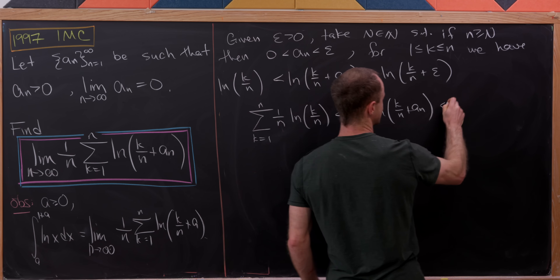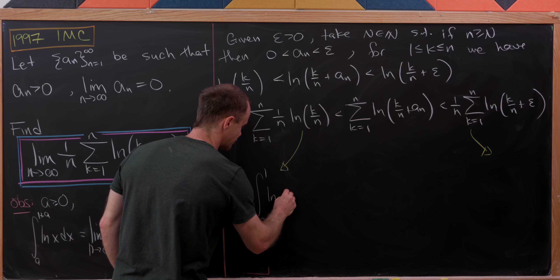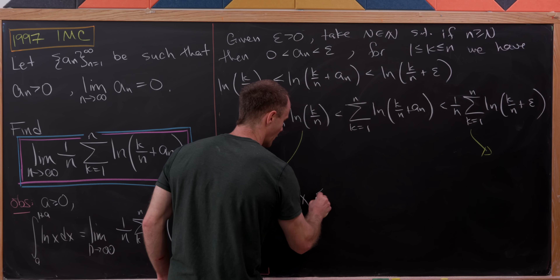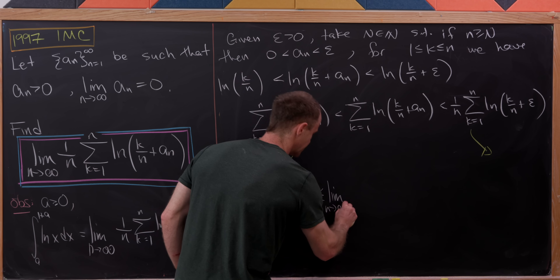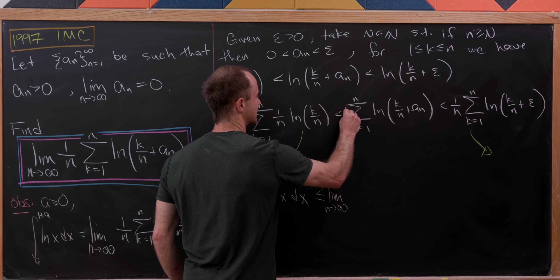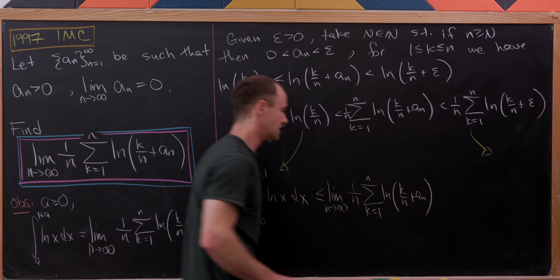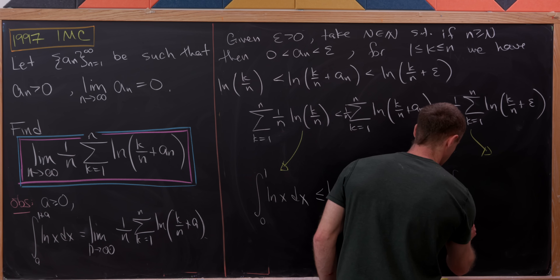Now we take the limit of all parts. The left-hand side, using our observation with a equal to zero, is the integral from zero to one of ln(x) dx. The middle is our goal limit: the limit as n goes to infinity of one over n times the sum as k goes from one to n of ln(k/n + a_n). The right-hand side, using our observation with a equal to epsilon, is the integral from epsilon to one plus epsilon of ln(x) dx.